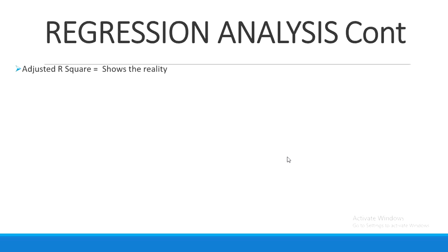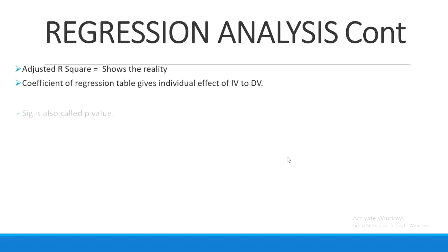Adjusted R-square shows the reality of the relationship between your variables. The regression table also shows the individual effect of each independent variable on the dependent variable, and the significant value which is called the p-value.